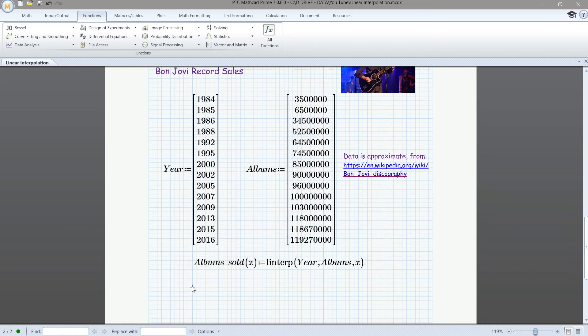Now, let's just evaluate our function. And for X, let's find out how many albums were sold, let's see, halfway between 1984 and 1985. So I will type 1984.5, and that'll tell us how many albums were sold halfway between 1984 and 1985. If we look to the right, we would expect to be halfway between 3.5 million and 6.5 million. And so sure enough, we're at 5 million albums sold there.